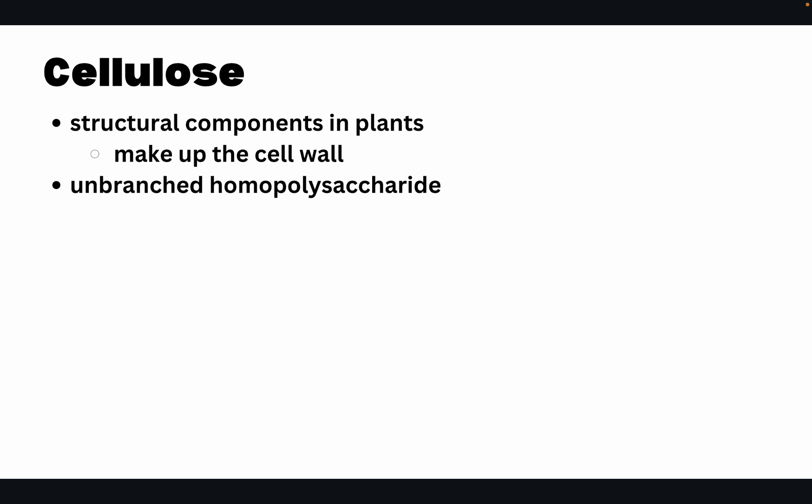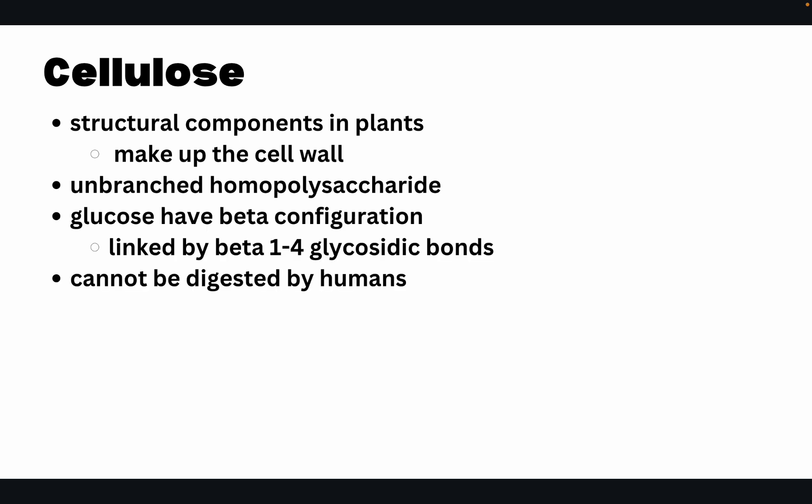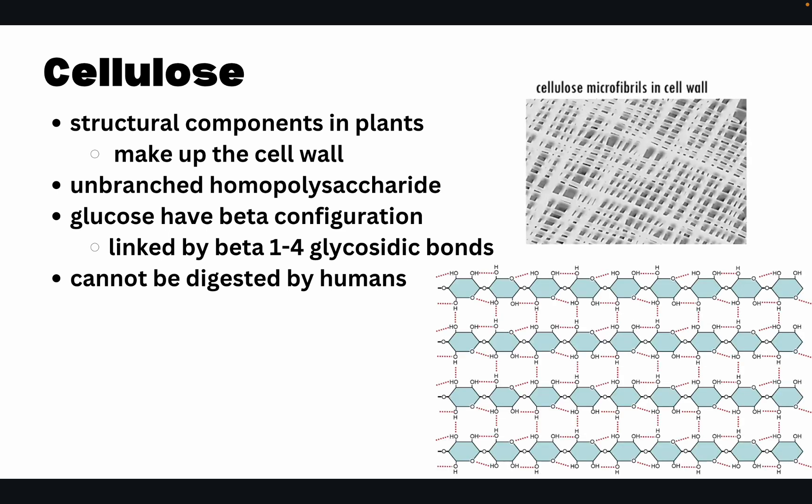Cellulose is a structural component in plants, making up the cell wall. It is an unbranched homopolysaccharide — linear in structure — where the glucose units have a beta configuration linked by beta-1,4-glycosidic bonds. Cellulose cannot be digested by humans.